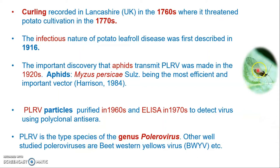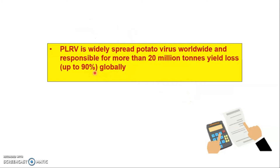Myzus persicae is the most efficient and important vector of Potato Leaf Roll Virus. PLRV is a very severe virus continuously affecting potato crops worldwide, causing 20 million tons of yield losses globally. In certain cases it is responsible for 90% potato losses, reducing quality of tubers, infecting stems, and causing upward rolling and curling of leaves.